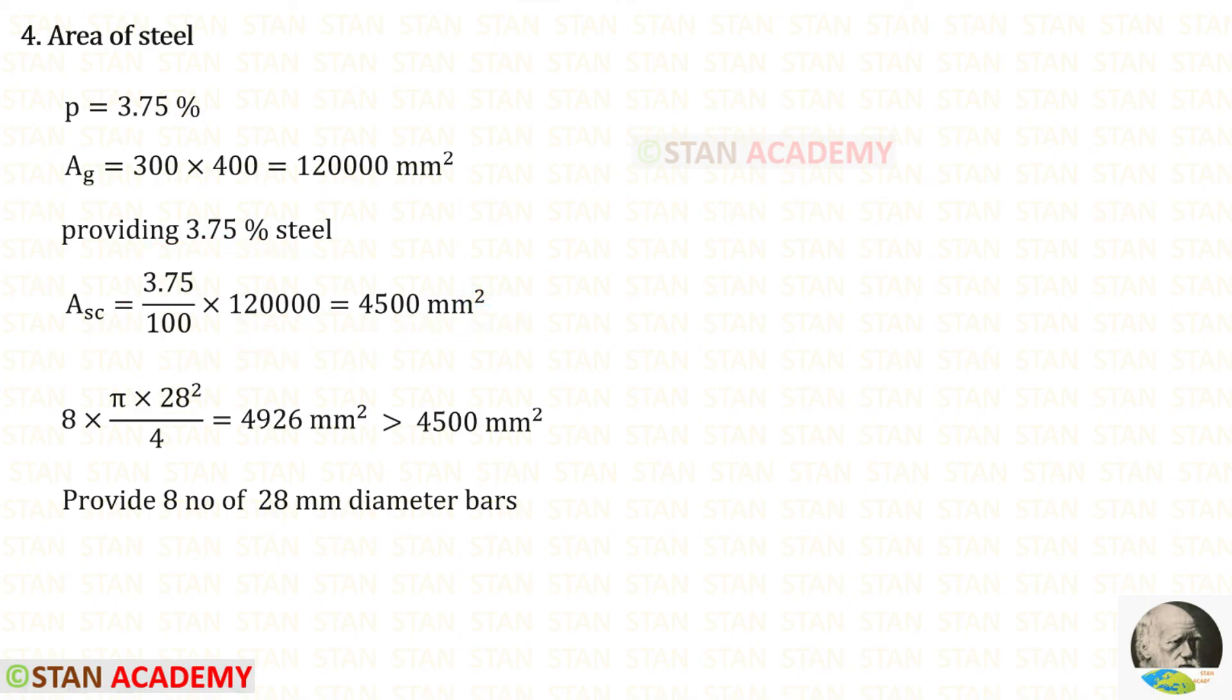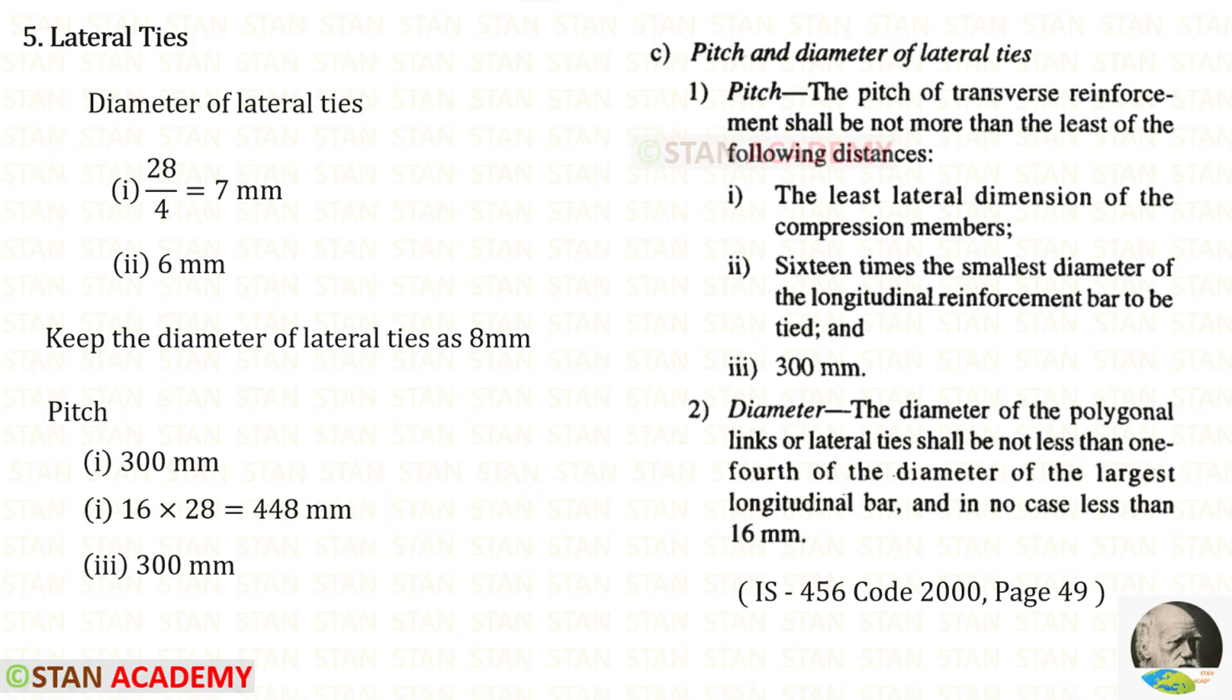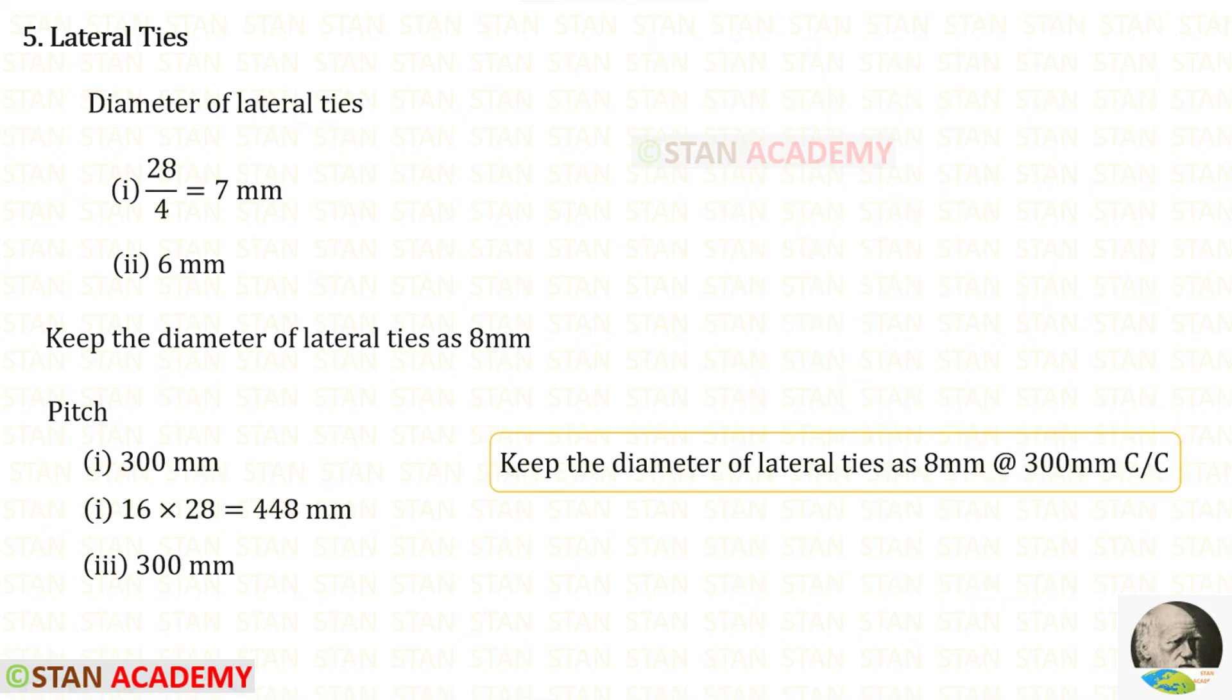Then using the trial and error method, we can find the number of the bars and the diameter of the bars. Let us provide 8 number of 28 mm diameter bars. From the previous videos, we know how to design the diameter of the lateral ties and the pitch. Let us keep the diameter of the lateral ties as 8 mm with 300 mm spacing.